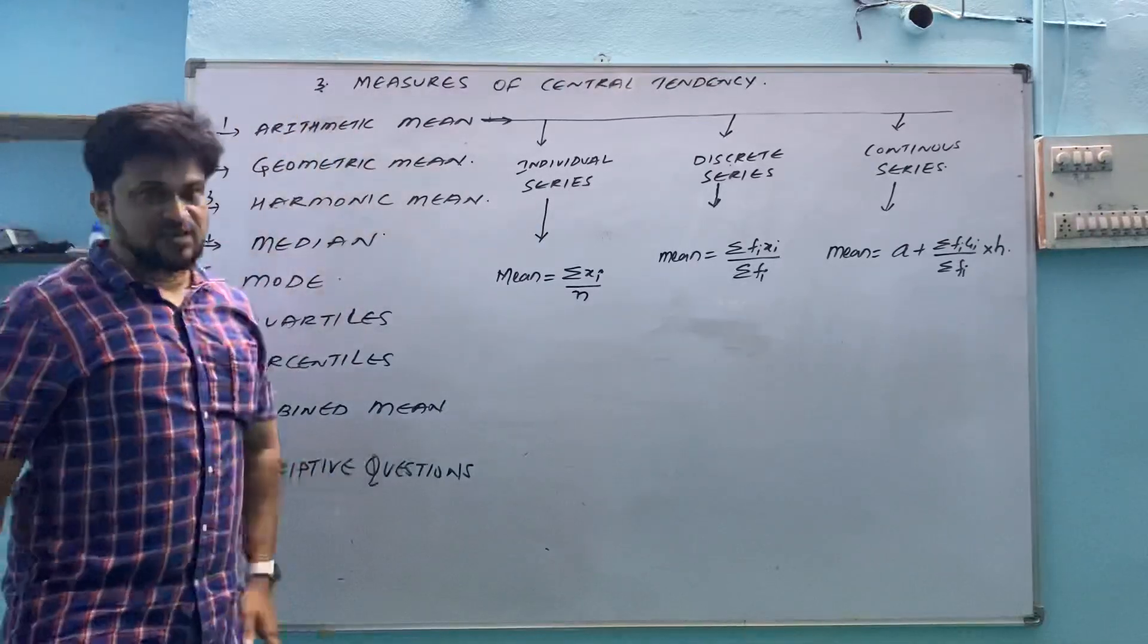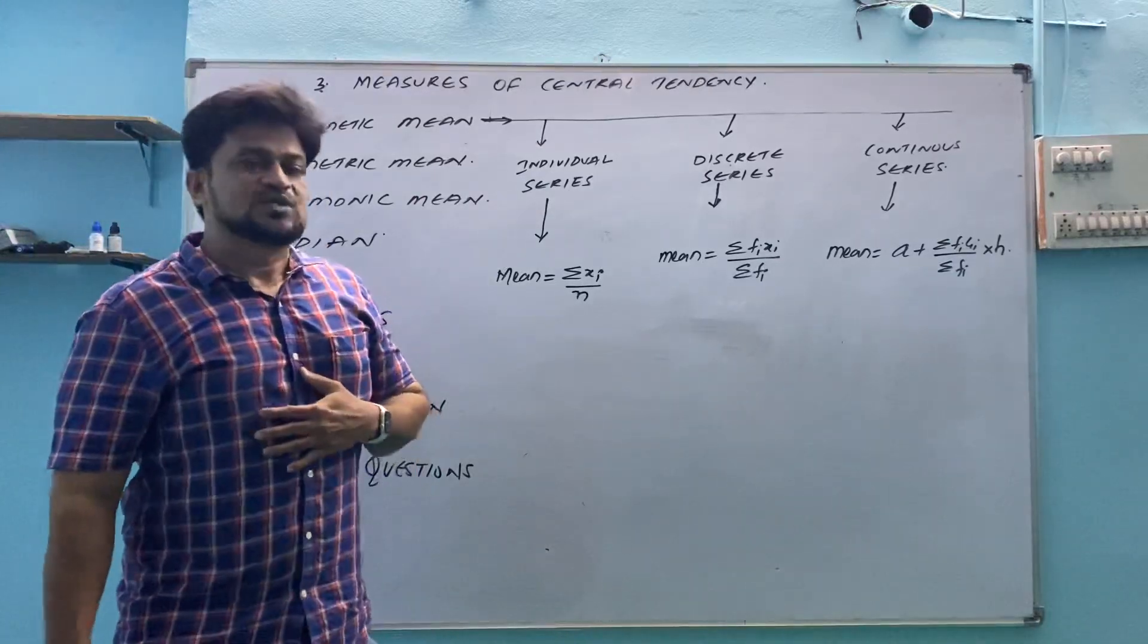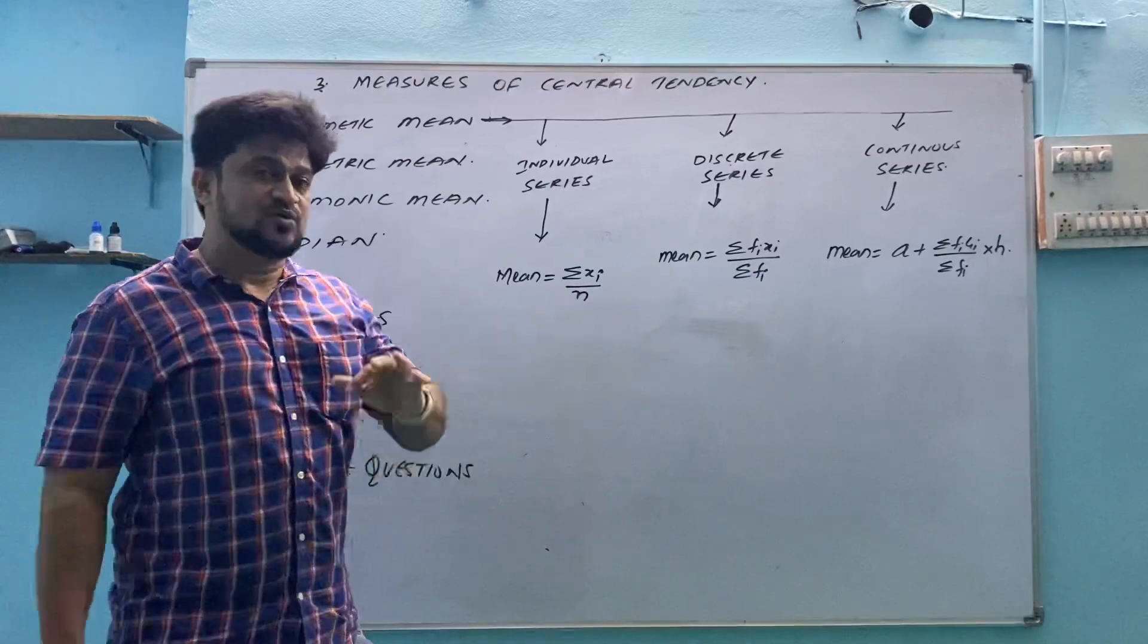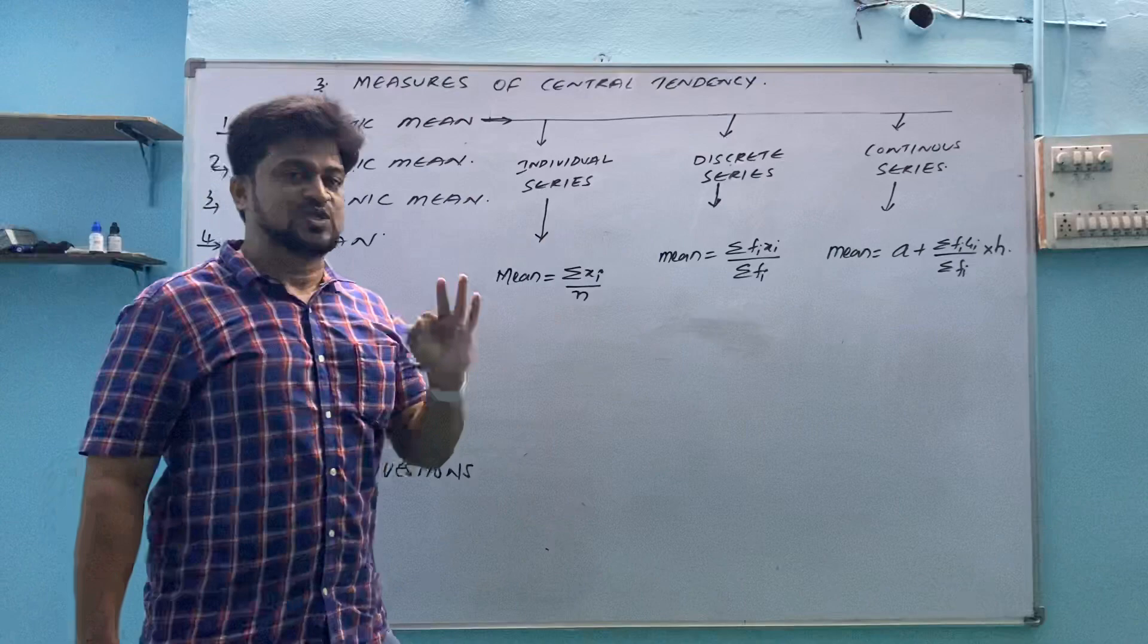First type is arithmetic mean. In arithmetic mean, we can't use single mean formula for all the questions because what I said earlier, think what why I showed you data is classified into 3 forms.